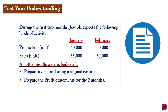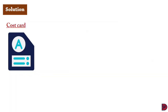During the first two months, Geo PLC expects the following activity levels: January production will be 60,000 units and February production will be 50,000 units. Sales will be 55,000 units for January and 53,000 units for February. All other results were as budgeted. We need to prepare a cost card using marginal costing and also prepare the profit statement for both January and February.